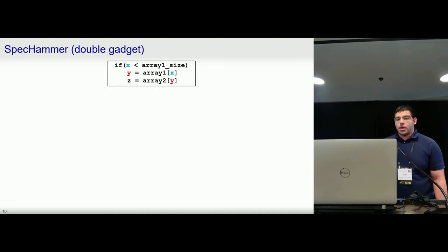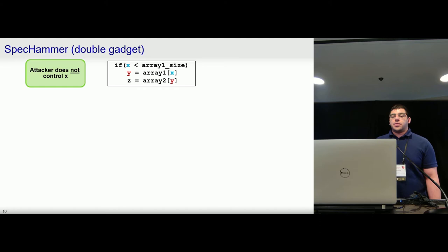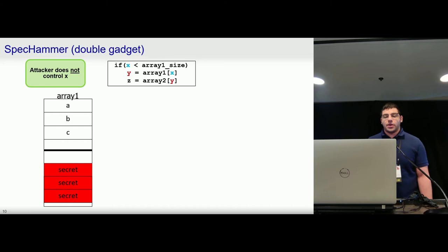So now we would like to use this to execute a Spectre attack even without direct control over X. So we assume similar behavior to what we had before: this nested array access within the conditional statement. This time the attacker does not control X. And we assume that if we call this victim enough times, inbounds values of X will be used frequently enough that the branch predictor will naturally be trained to predict that the next value of X will be in bounds as well and that the branch should be taken.